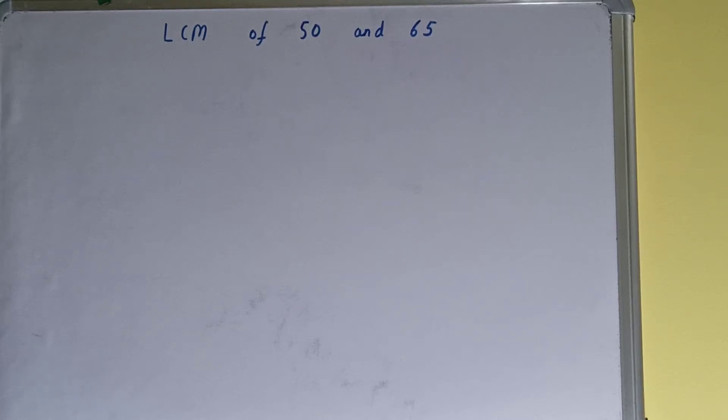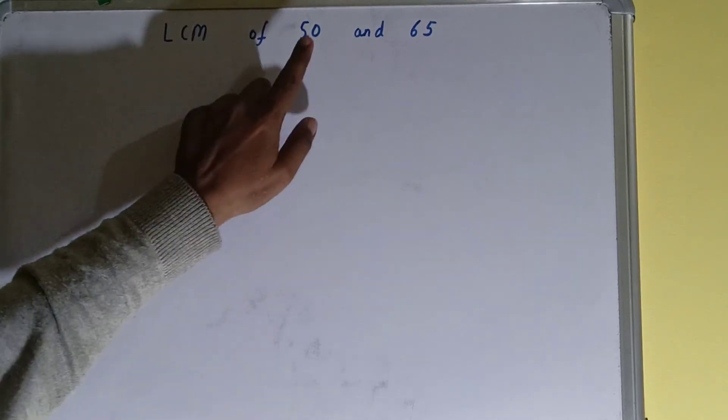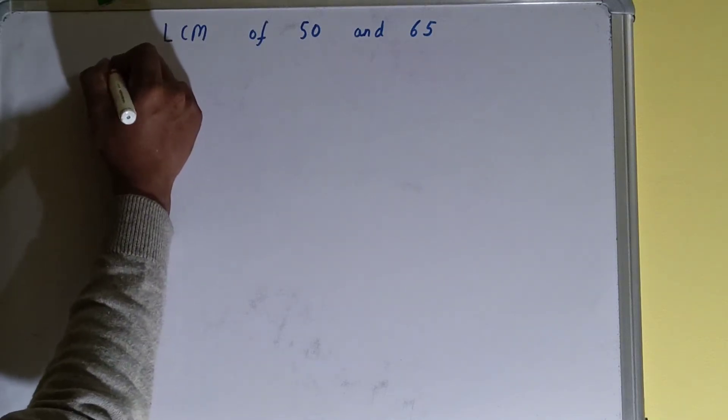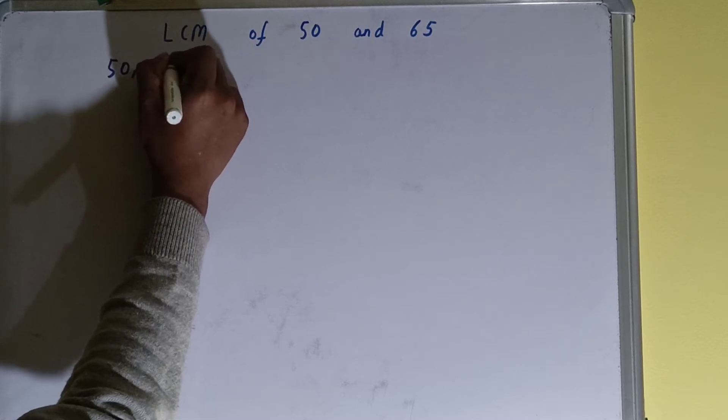Hello friends, and in this video I'll be helping you with the LCM of the numbers 50 and 65. So let's start. To find it out, we first need to write both the numbers like this: 50, 65.